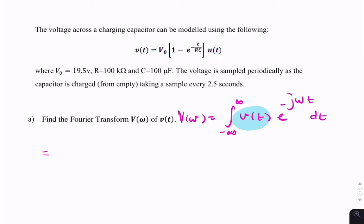We've got V naught times the integral from 0 to infinity, e to the minus j omega t dt. The reason I'm integrating from 0 is because I have the unit step.